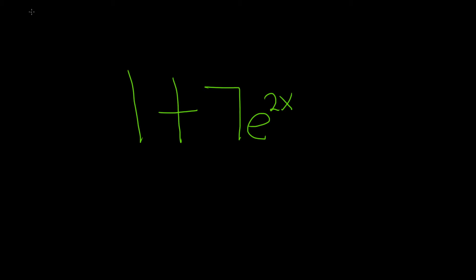Which I'll call L, which when we apply L to this function, 1 plus 7e to the 2x, we get 0. So it makes it 0. That's what it means for the operator to annihilate the function.